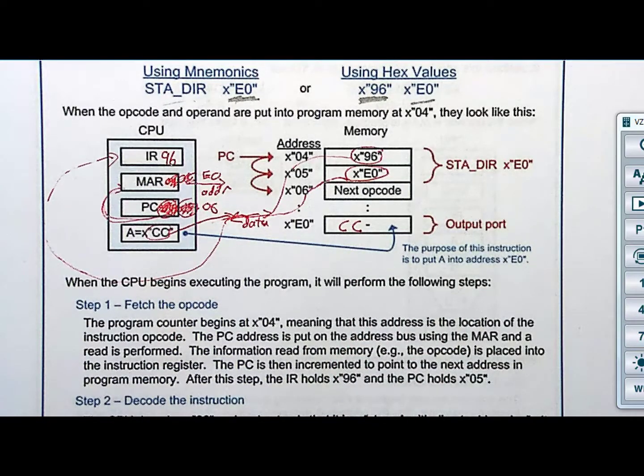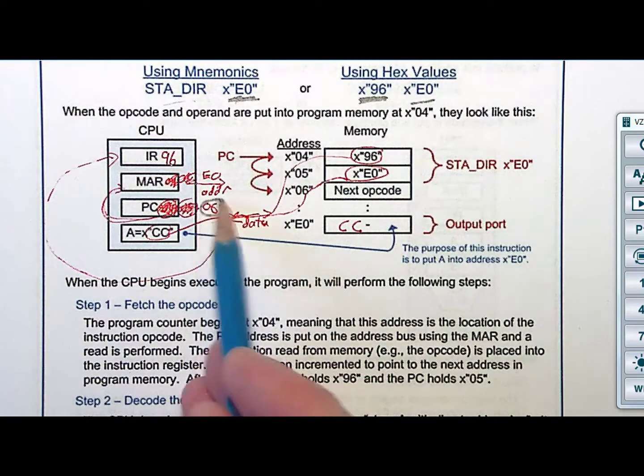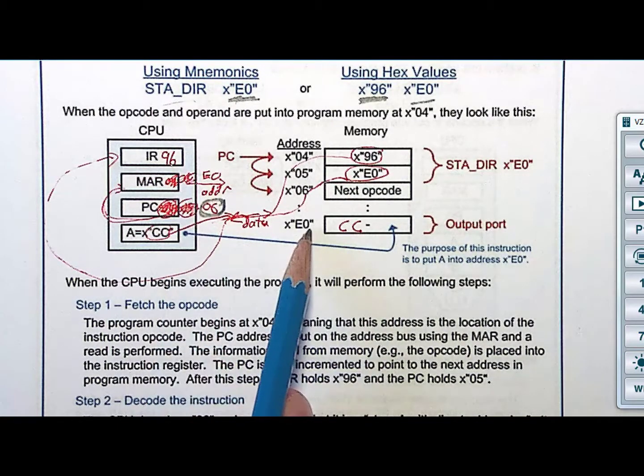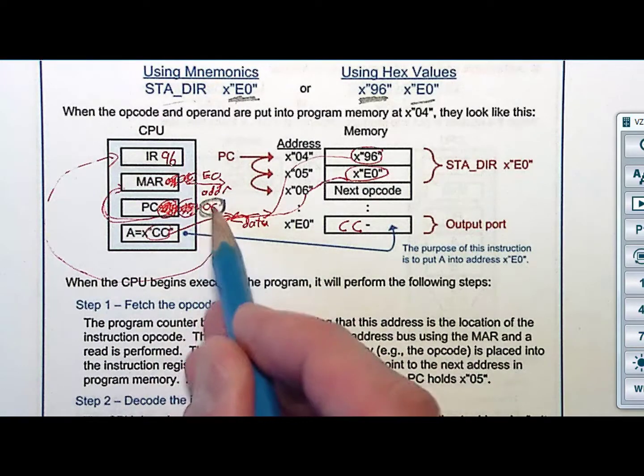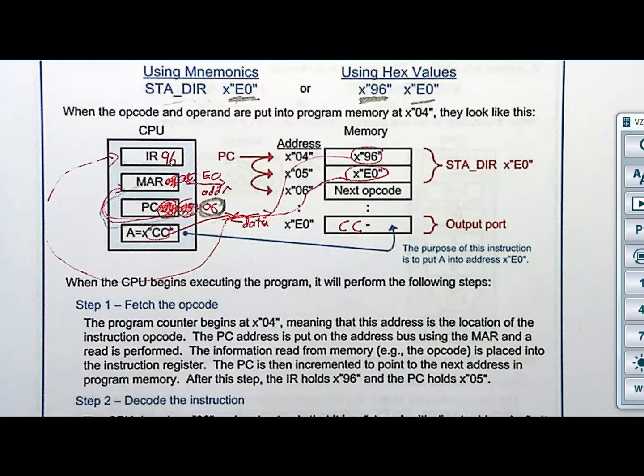I asked myself this, am I done? I have taken the contents of A and written them out to address E0. It took two reads and a write. Am I ready to execute the next instruction? The answer is yes, because I left the program counter pointing at 06. So even though the memory address register is now pointing down to E0, who cares? Because I know in the next instruction, I'm going to take 06 and put it into MAR and go and get that op code.